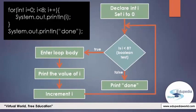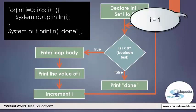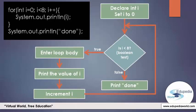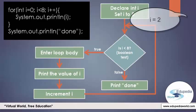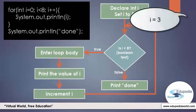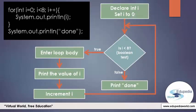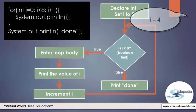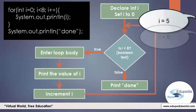We check the condition again — whether i is less than 8. Now i is 1, and 1 is less than 8, so we go in the true path again: enter the loop body, print i, and increment by 1. This time i is 2, and 2 is less than 8, so we again enter the true path. This continues for i equal to 3, 4, 5, 6, and 7, printing each value.